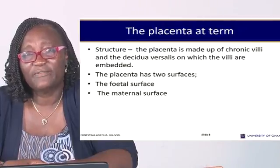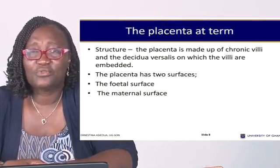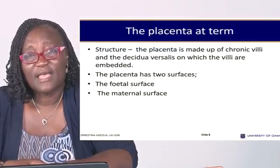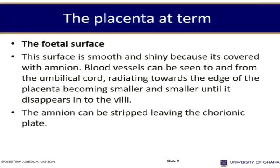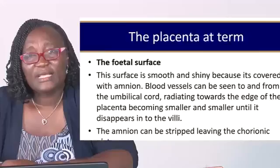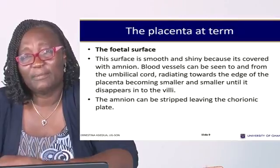The placenta is made up of chorionic villi and the decidua basalis, in which the villi are embedded. The placenta has two main surfaces: the fetal surface and the maternal surface. The fetal surface faces the baby in utero. The surface is smooth and shiny and is covered by a thin layer referred to as the amnion. It has blood vessels that can be seen coming from the umbilical cord, radiating towards the edge of the placenta and becoming smaller and smaller until they disappear into the villi. The amnion can be stripped, leaving the chorionic plate.